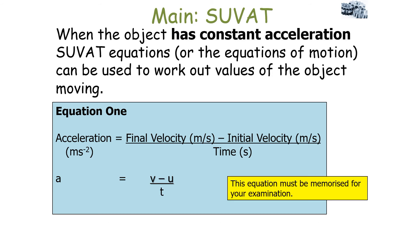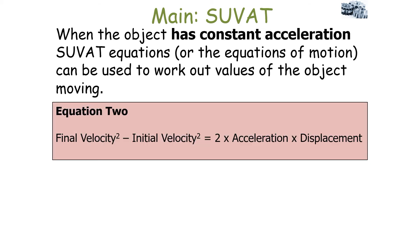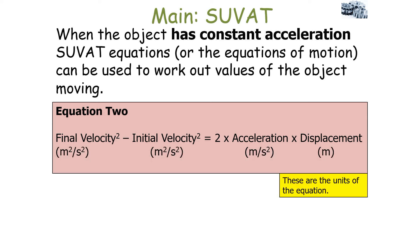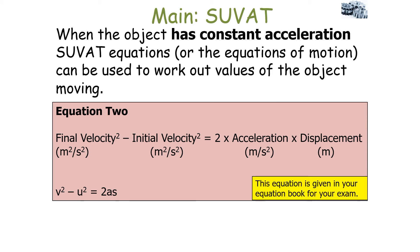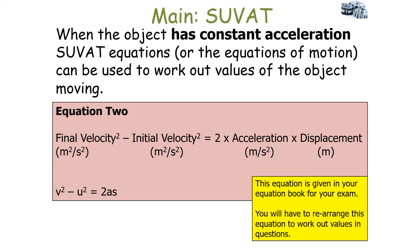This equation must be memorised for your examination. The second equation is: final velocity squared minus initial velocity squared equals two times acceleration times displacement. In symbol form: v² − u² = 2as. This equation does not need to be memorised — it will be given to you in your equation book or equation sheet for your exam. If you're doing a higher tier paper, you will have to rearrange this equation to work out values such as u, v, a, or s.